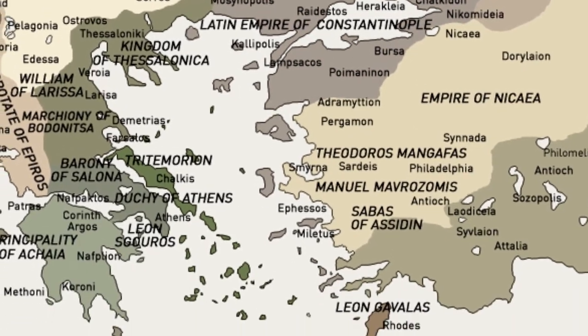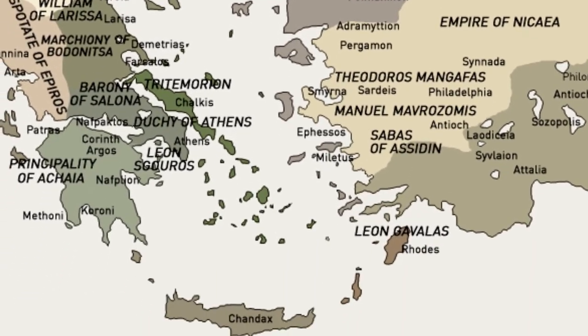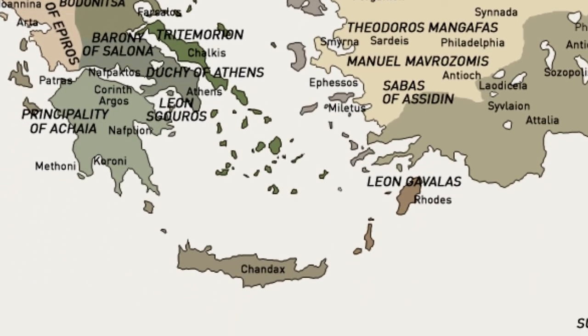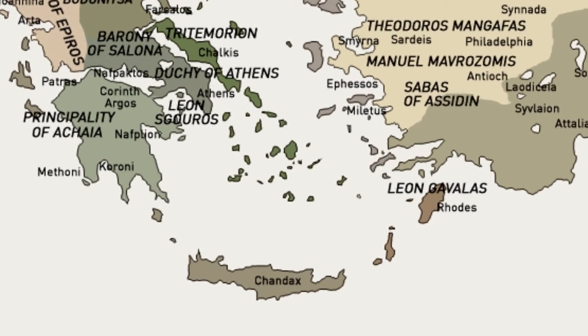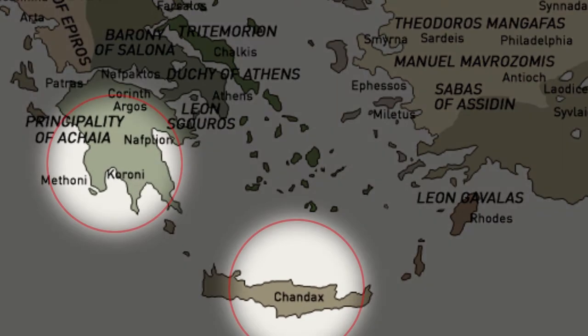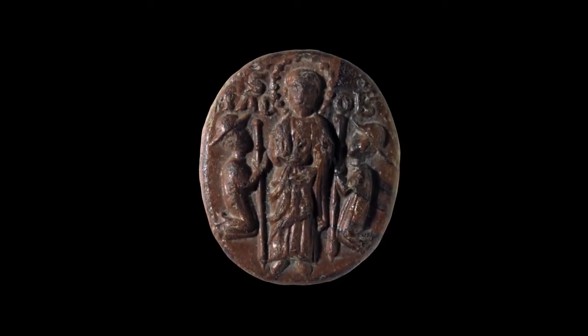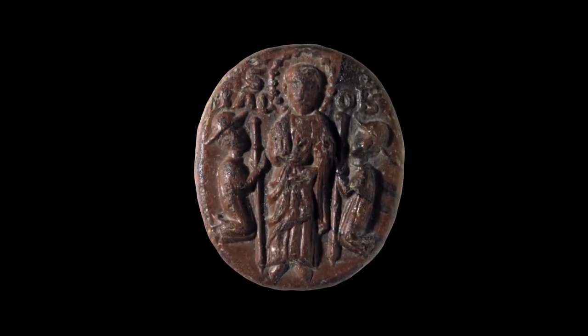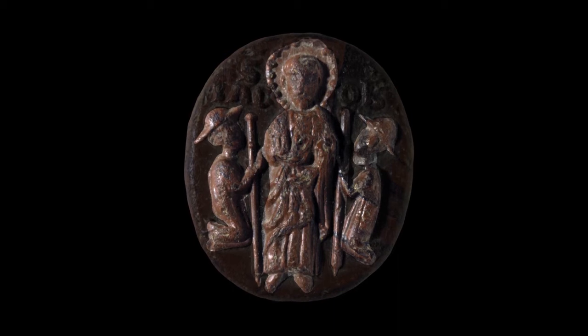Among those involved in the Fourth Crusade, a particularly significant role was played by the Venetians, who gained considerable territories that were vital to their commercial interests, including Crete, Methone, and Korone.